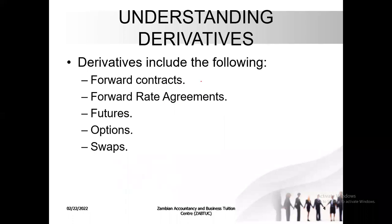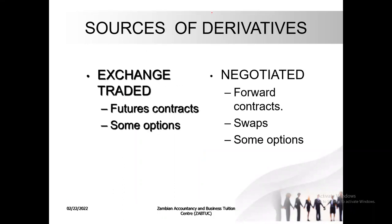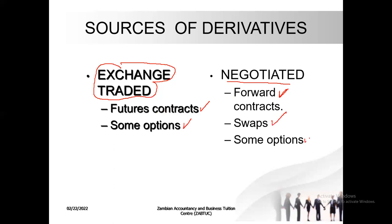Derivatives include the following: forward contracts, futures, options, and swaps. Where do derivatives come from? Some derivatives are found at exchanges — we call them exchange-traded. For instance, futures are similar to forward contracts but these are exchange-traded, and some options are also exchange-traded. Then you've got those that are negotiated over-the-counter, or OTCs: forward contracts, some swaps, and also some options. You can go to the bank and find them.